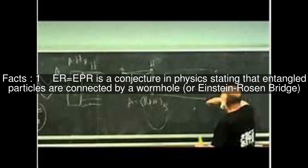ER equals EPR is a conjecture in physics stating that entangled particles are connected by a wormhole, or Einstein-Rosen bridge.